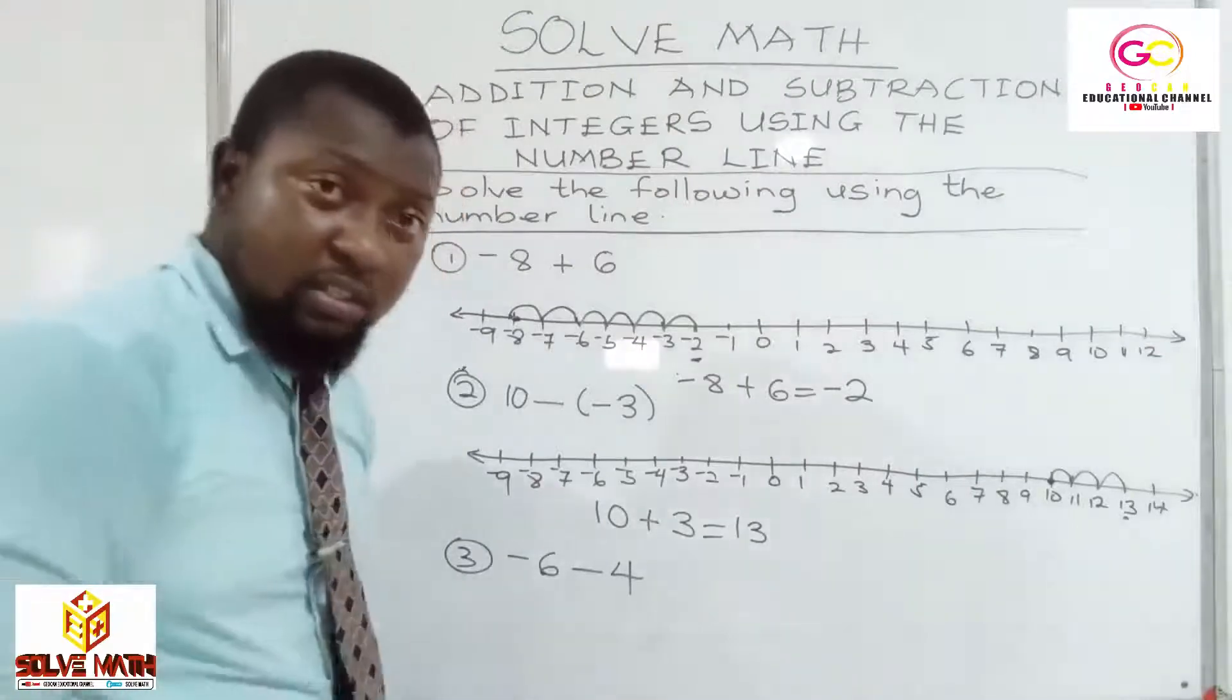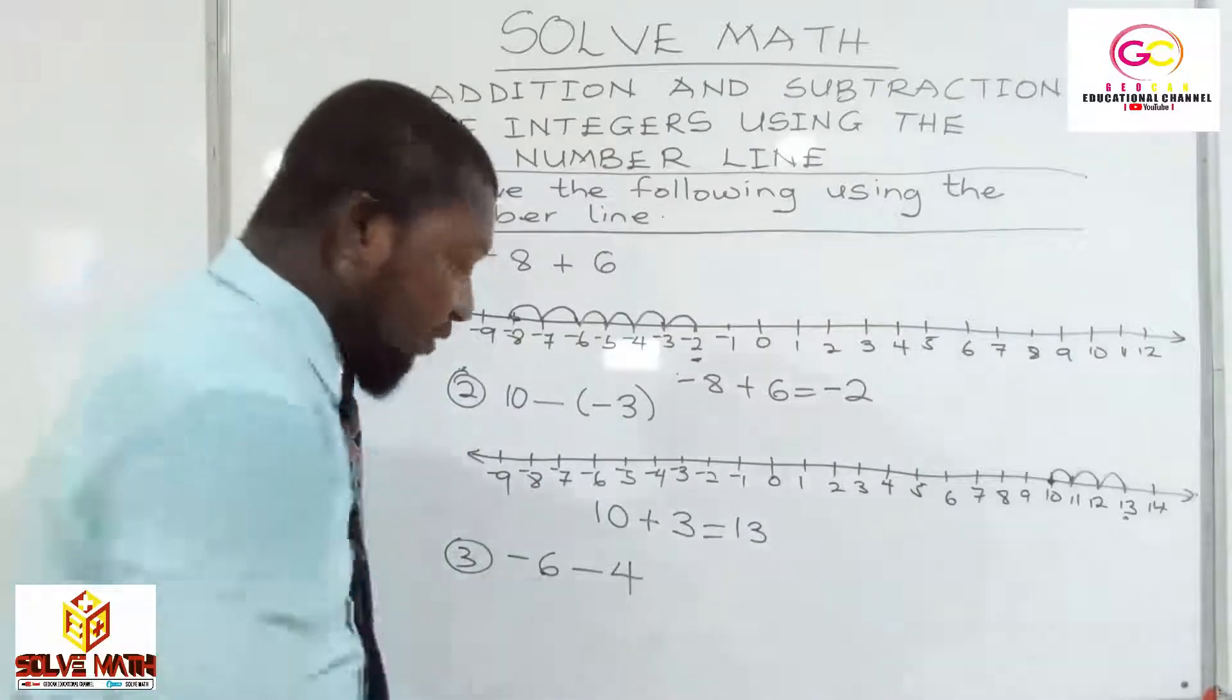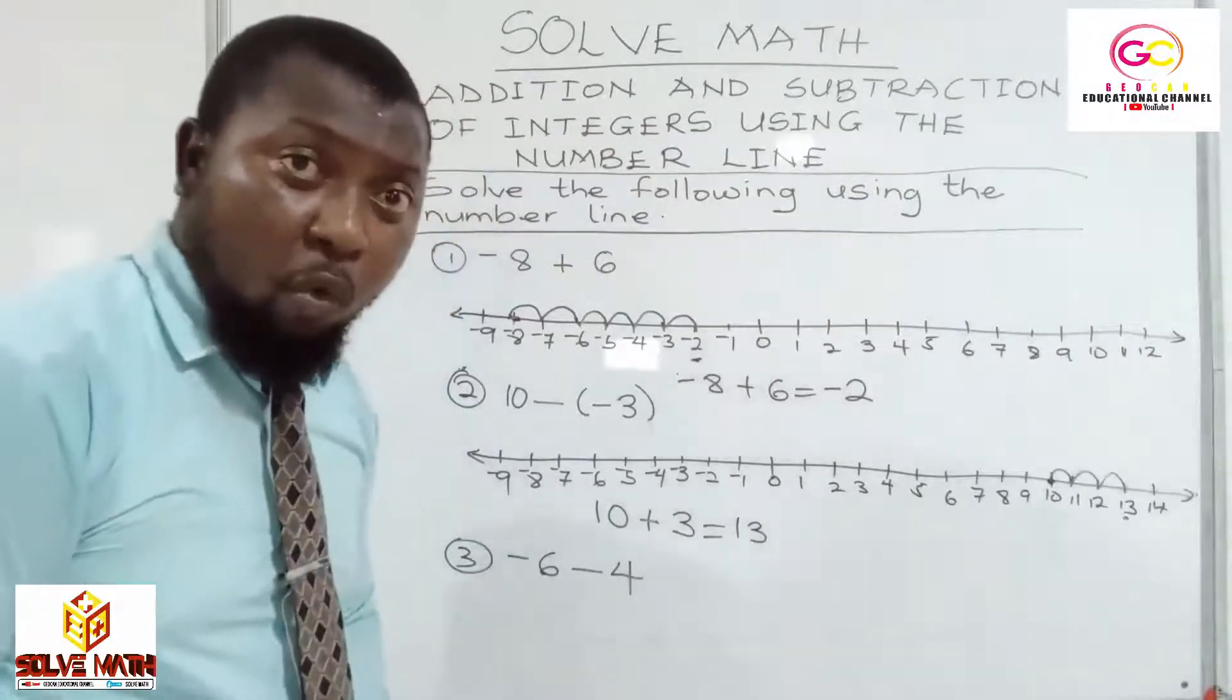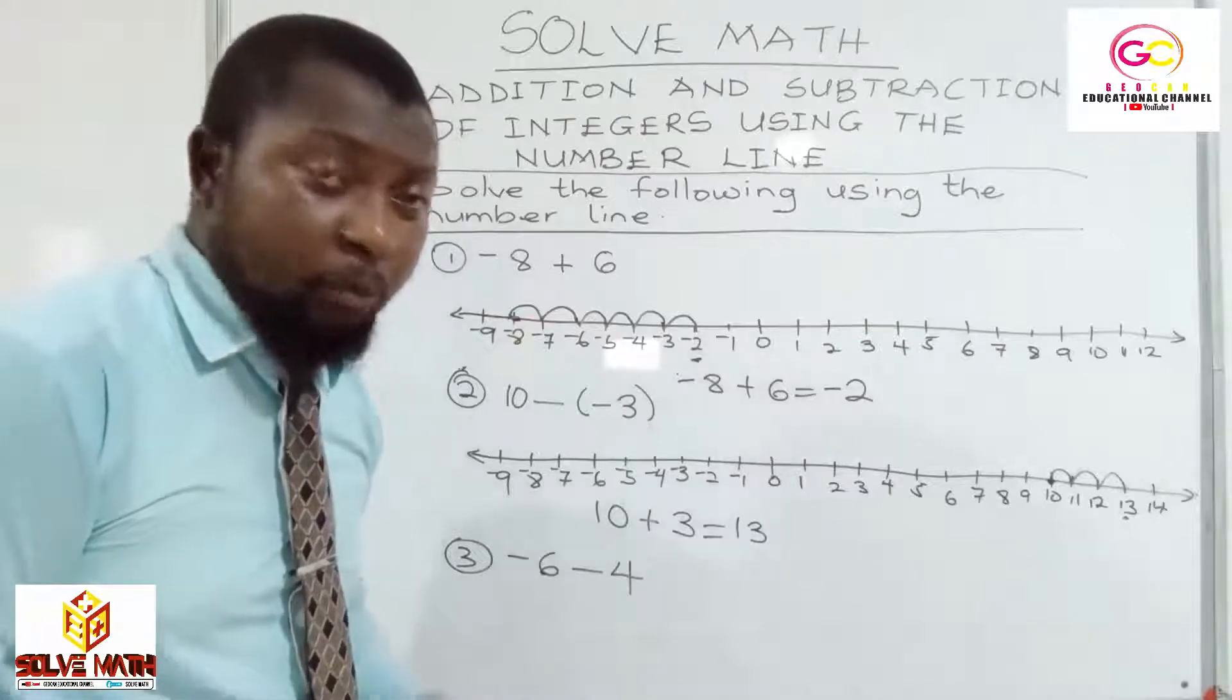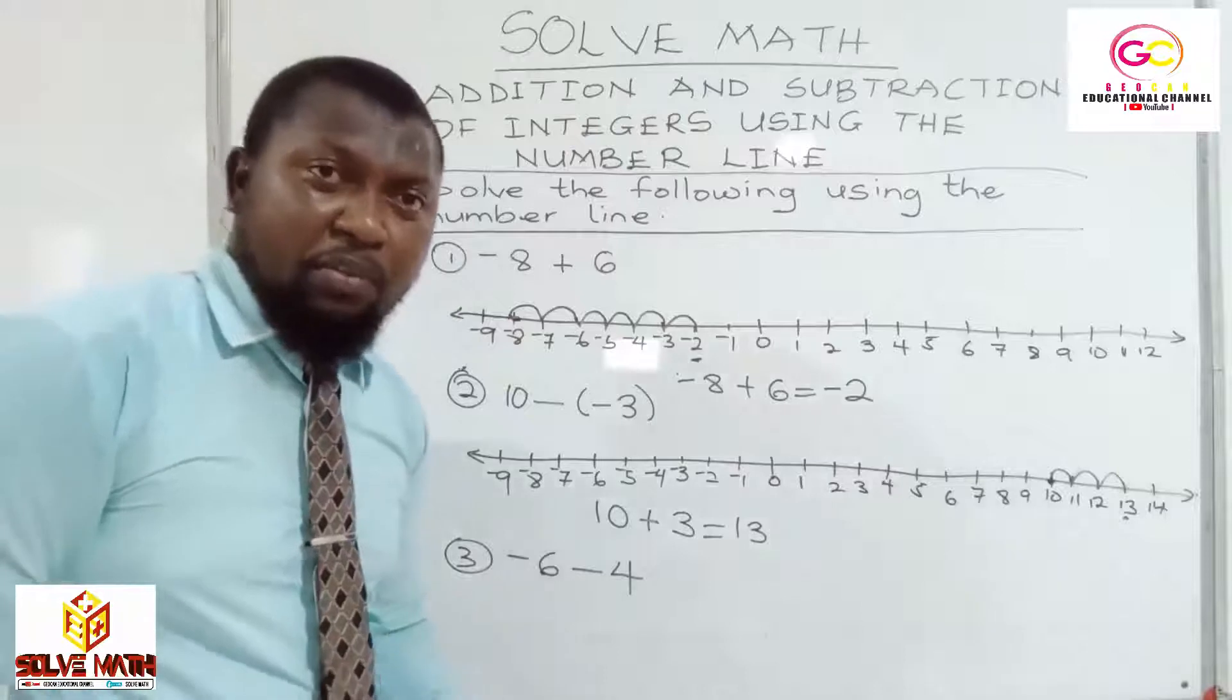I will leave this question for you as question 3 for you to solve on your own. Okay? Negative 6 minus 4. And the rule is using the number line. Try and play around it. Solve it. And finish me with the results.